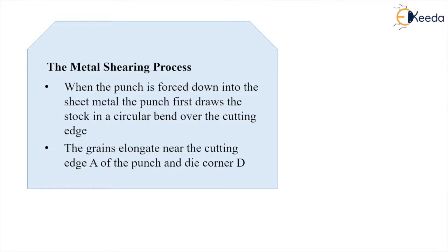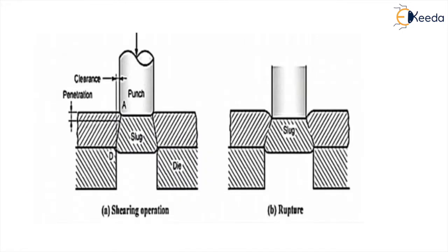When the force is applied by the punch on the top of the sheet, the top of the sheet is basically compressing elastically, while the bottom portion is elongating elastically. The amount of elastic compression and elastic elongation are not the same — the elastic compression is huge, much larger than the elastic elongation.